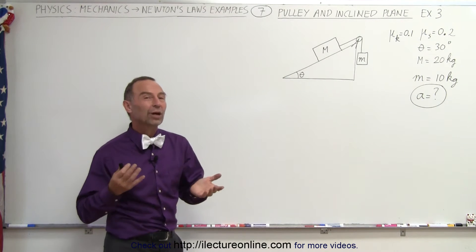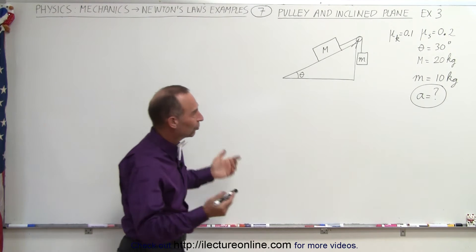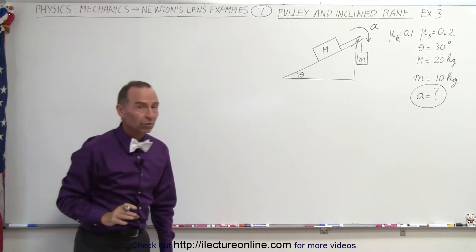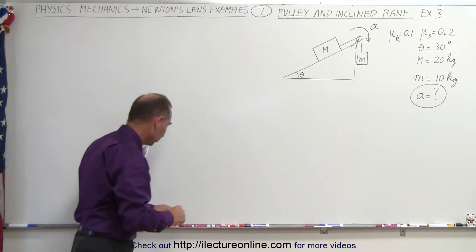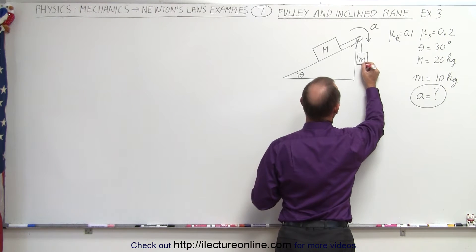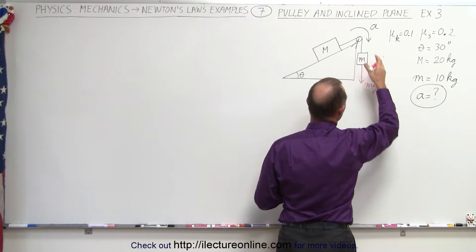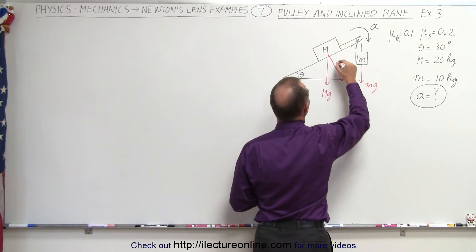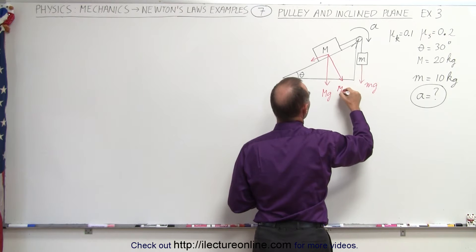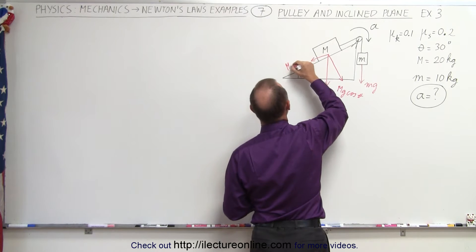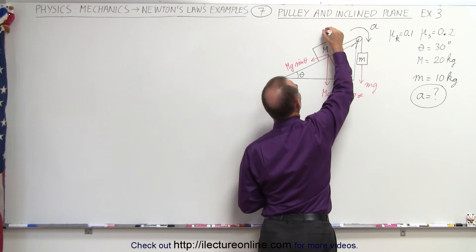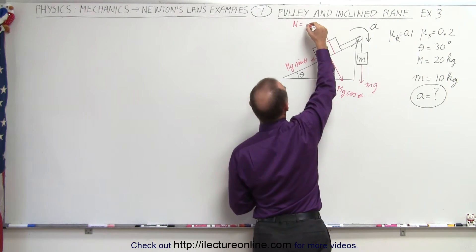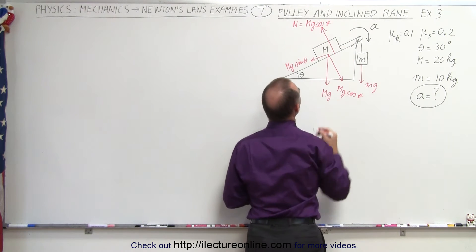Since we're not quite sure what direction the acceleration is going to go, we assume let's try this way — I believe this is the direction of the acceleration, and let's go find out what it is equal to. The first thing we're going to do is identify all the forces acting on the system. We have the small mg, which we believe is sufficient to provide the acceleration of the system, and the big mg on the large mass. We find the perpendicular component — mg times the cosine of theta — and the parallel component — mg times the sine of theta. We also have the normal force, which equals big mg cosine theta in the opposite direction.